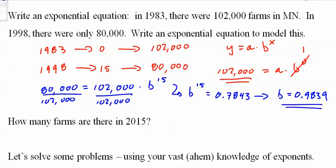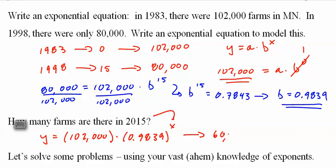And we now have a model we can use. The model is y equals 102,000 times 0.9839 to the x. Put 2015 in there—we have to convert that, 2015 minus 1983—and you get there should be 60,678 farms. So the number is continuing to drop, but not quite as rapidly because it's exponential decay. It kind of bottoms out.